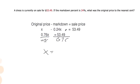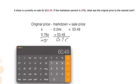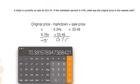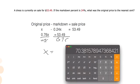So X is going to be whatever this result is. So $70.38, it was the original price to the nearest cent, $70.38.